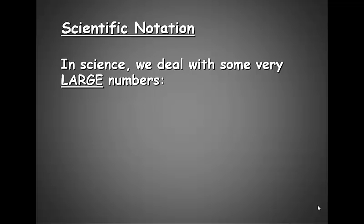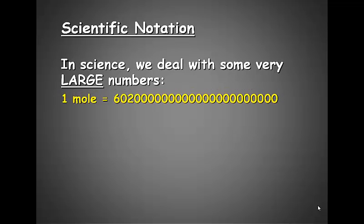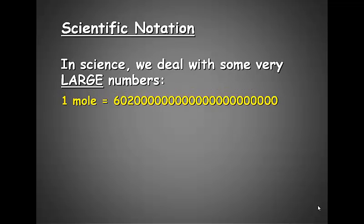Sophomore Chemistry Scientific Notation. In chemistry, we deal with some very large numbers, like the one that you were introduced to in Unit 1, or a mole. That's 602 followed by 21 zeros.